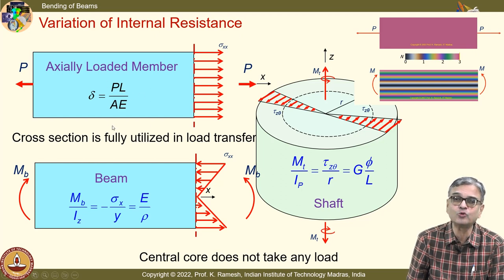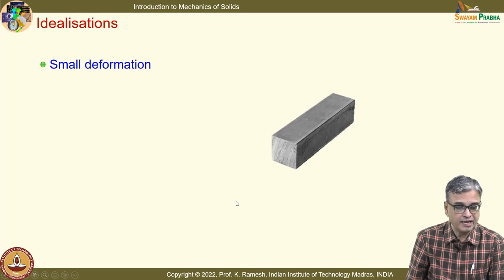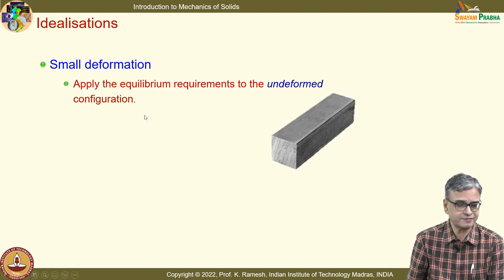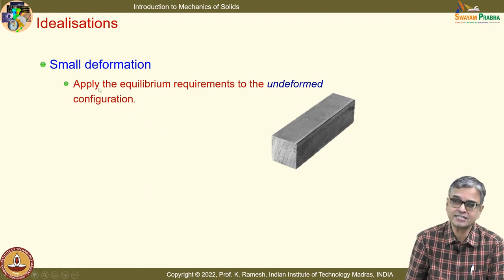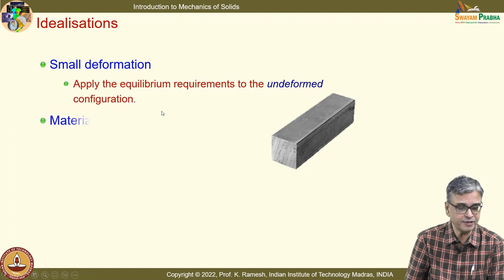We have effectively used δ = PL / AE when analyzing the hoop — it is a very famous expression. We have been able to do this with important idealizations. We said it is small deformation. When I say small deformation, we imply: apply the equilibrium requirements to the undeformed configuration — that is very, very important.